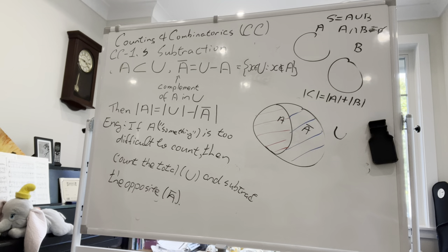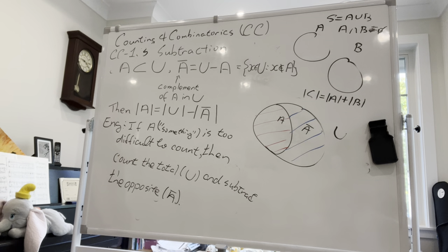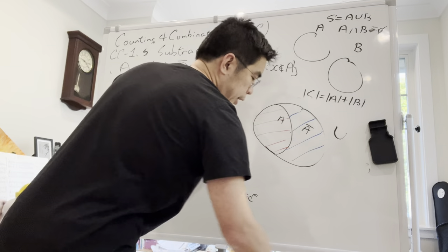To give a trivial example: if in your class there are 20 students and 12 students wear glasses, how many students do not wear glasses? Twenty minus twelve equals eight. So counting the opposite gives us the answer.